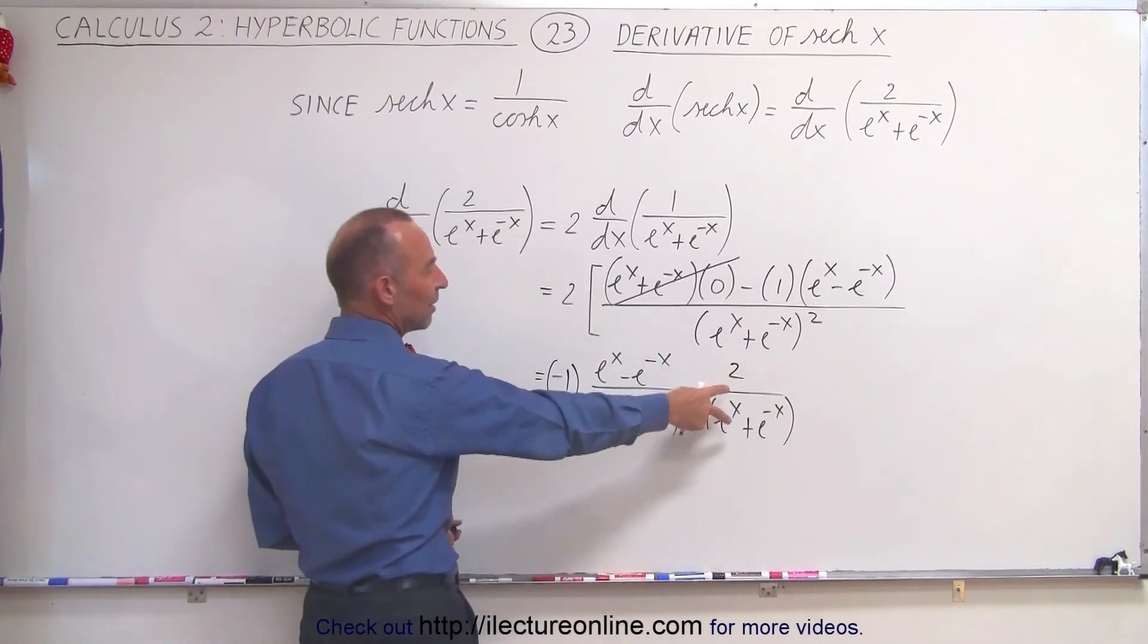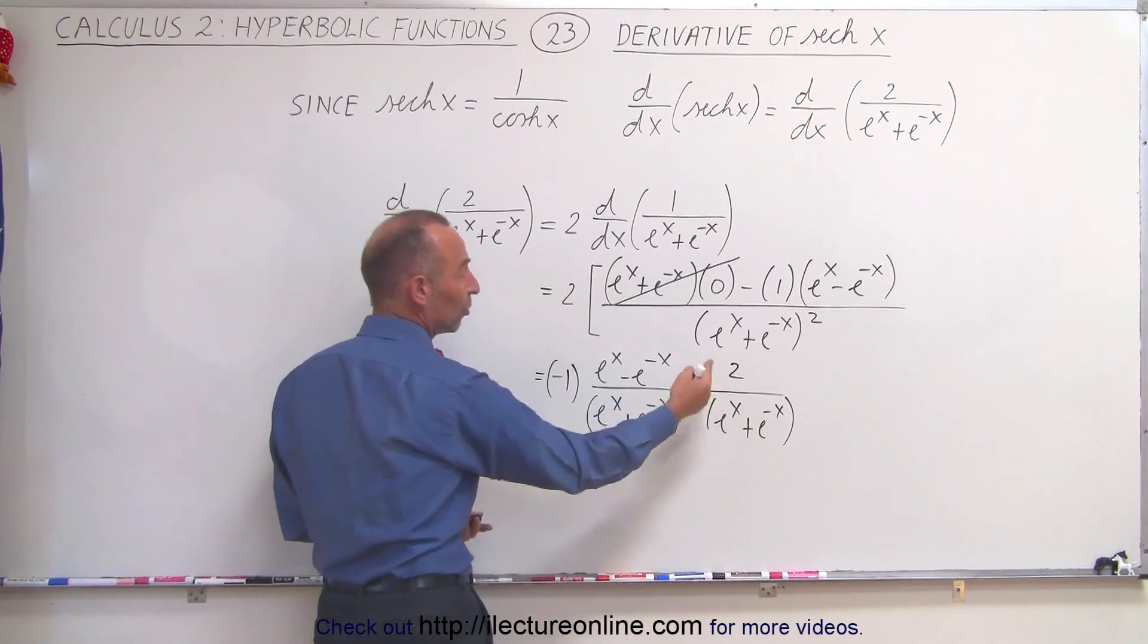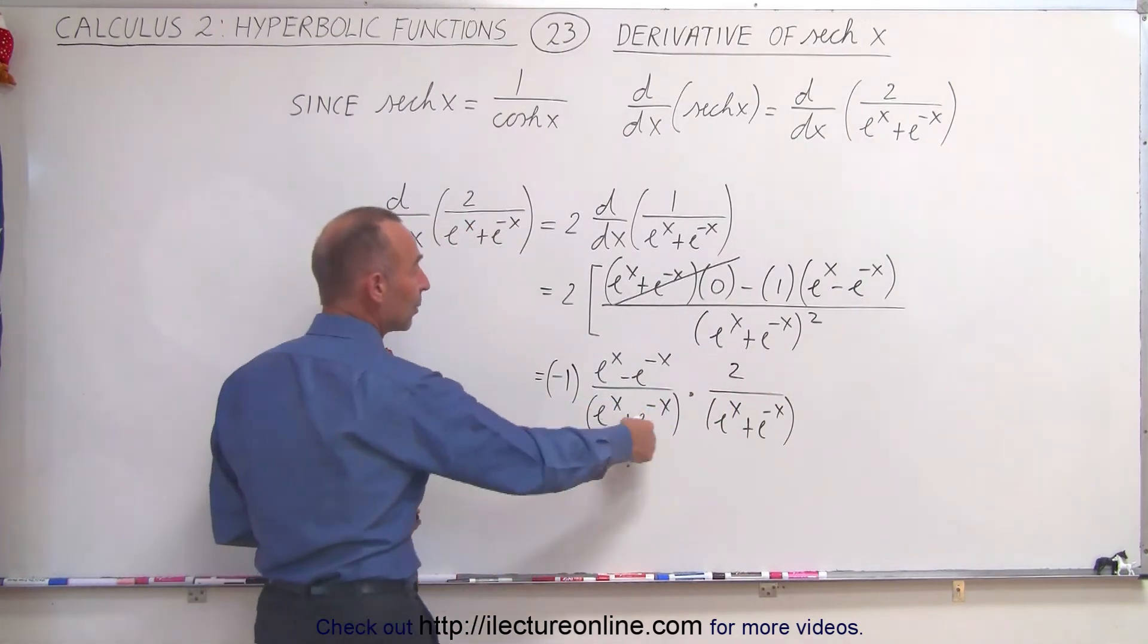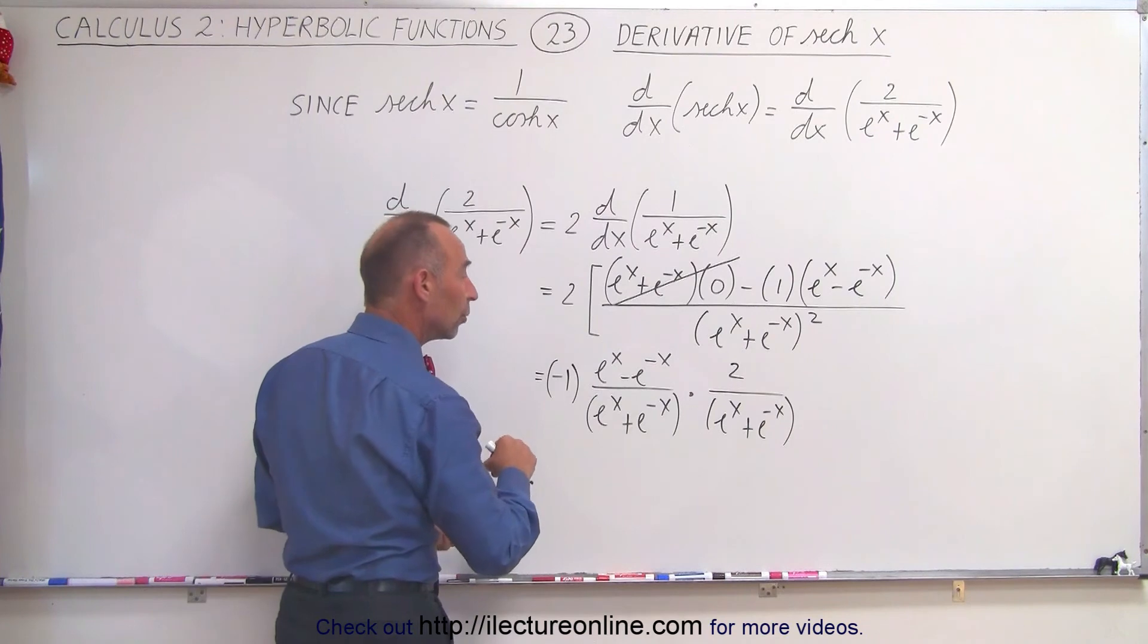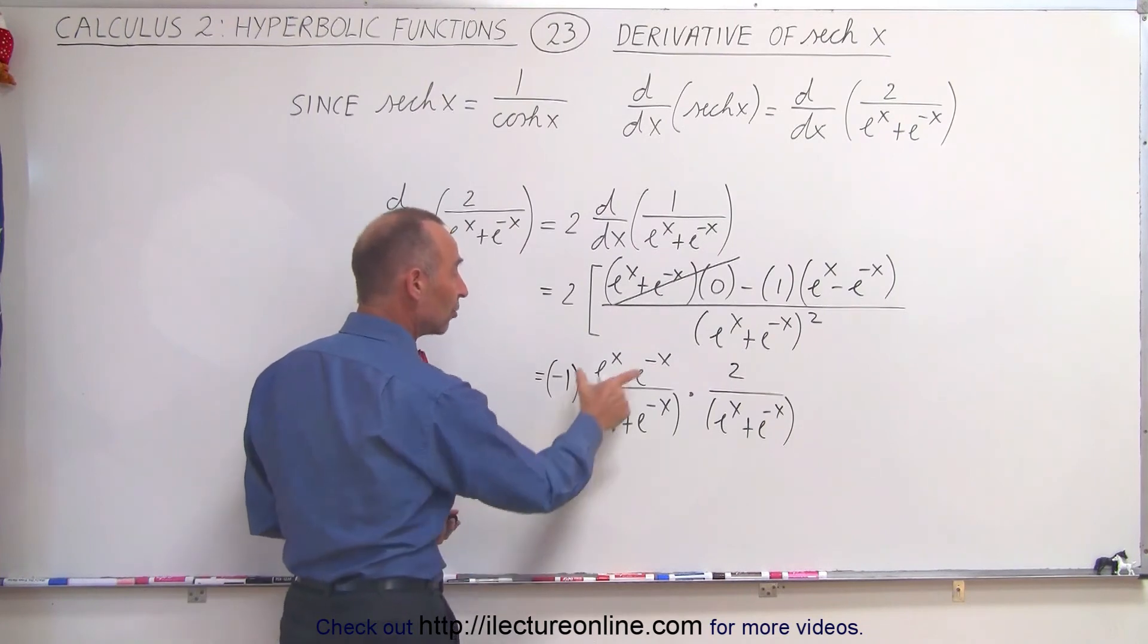There we go. So now we have the inverse of the hyperbolic cosine, which is basically the hyperbolic secant. And here we have the hyperbolic tangent, because it's sine over cosine.